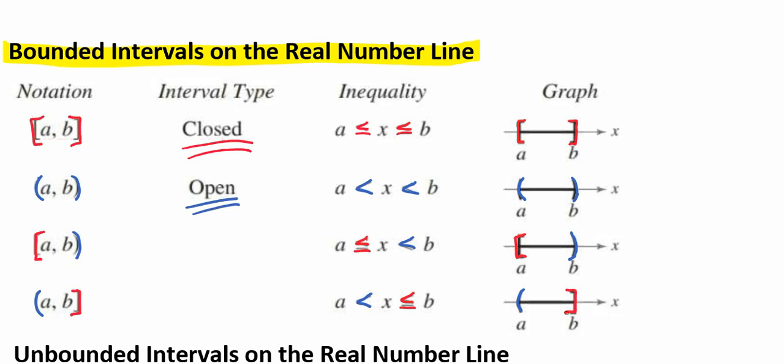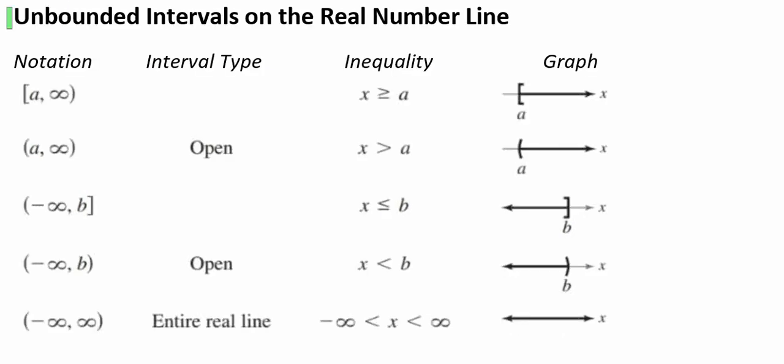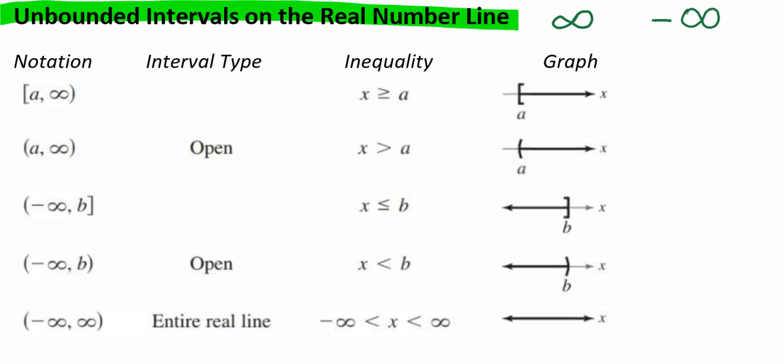So anywhere that we see a bracket, that point is included. And anywhere that there is a parentheses, that point is not included. Now let's talk about unbounded intervals. Here you're going to notice some symbols: a positive infinity symbol and a negative infinity symbol.